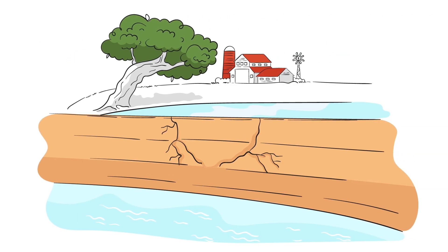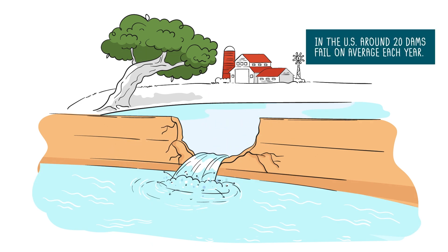Older dams can and do fail, often with disastrous results, including loss of life. In the U.S., around 20 dams fail on average each year.